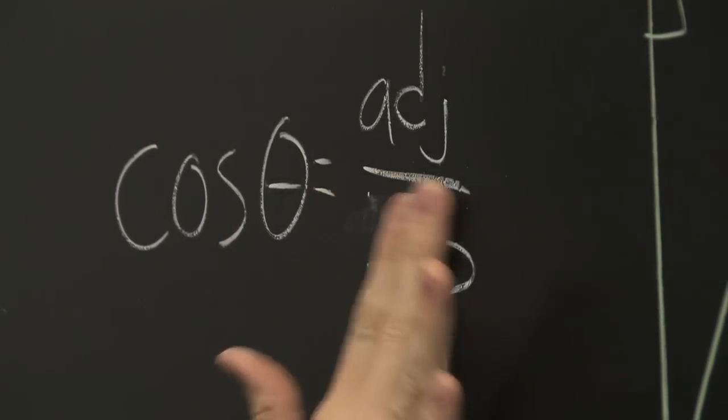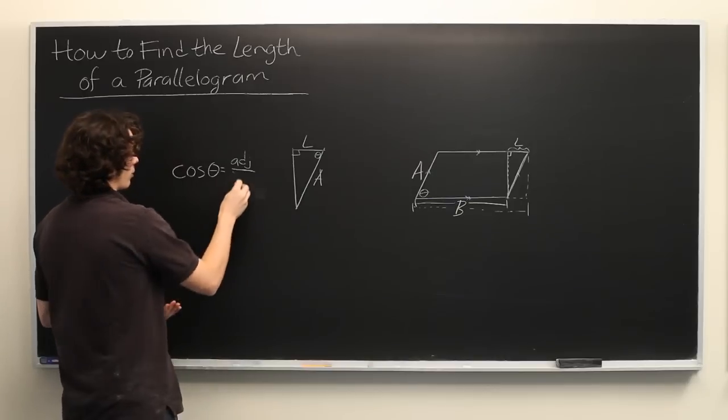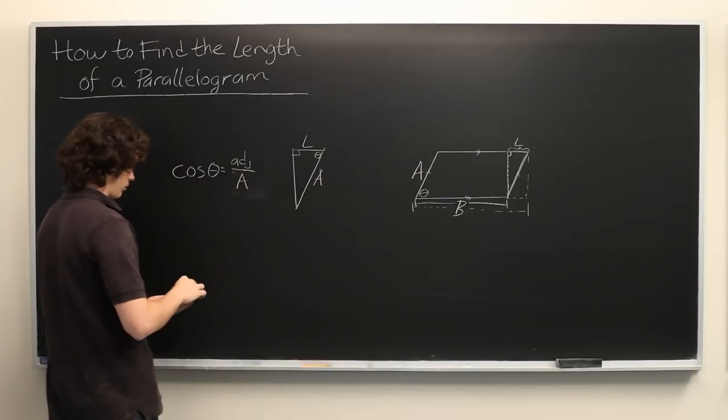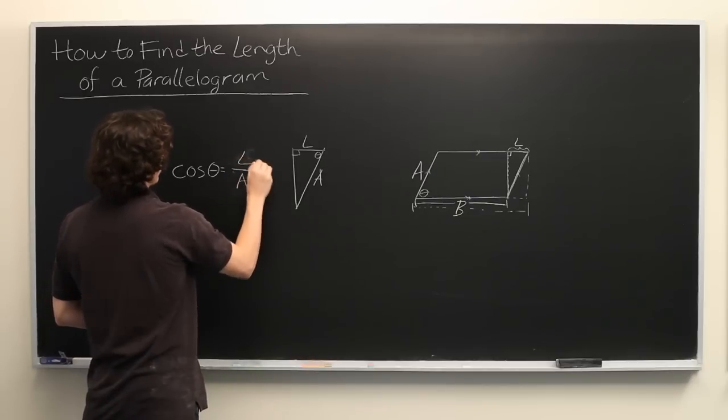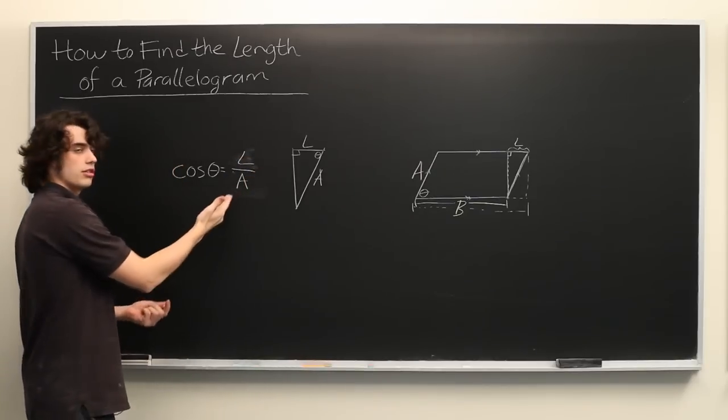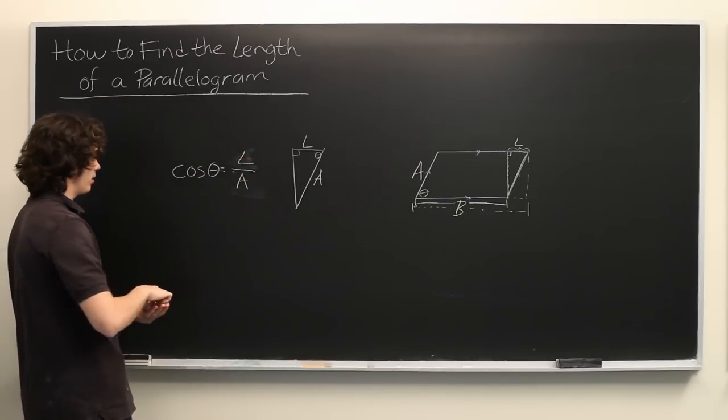Here, the hypotenuse is a, which we already know, and the adjacent leg is l, which we're trying to figure out. We can simply multiply both sides by a to get our answer.